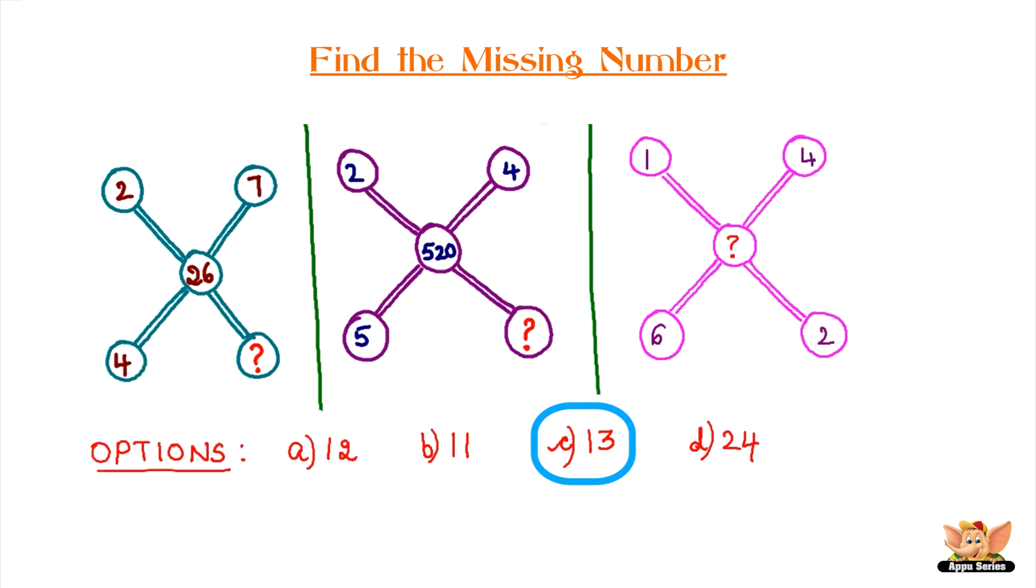Answer is Option C: 13. In the first set, add all the outer numbers to get the middle number. In the second set, multiply all the outer numbers to get the middle number. In the third set, add all the outer numbers to get the middle number.